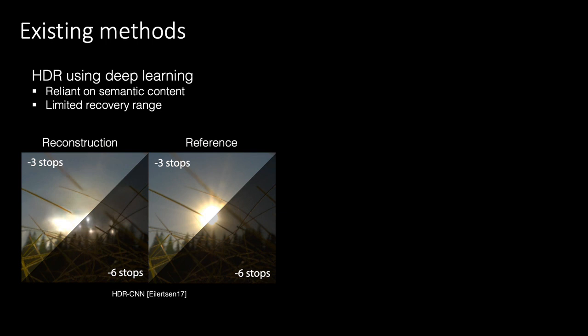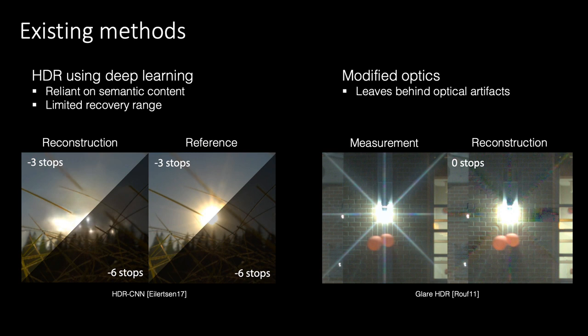Recently, deep learning has been used for HDR prediction from a single shot. However, these methods also fail to recover large dynamic ranges. Another single-shot approach uses modified optics to encode saturated scene content into unsaturated regions. Although this allows for better prediction of high-intensity content, it leaves behind noticeable artifacts in the unsaturated regions.